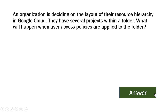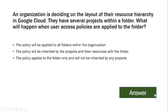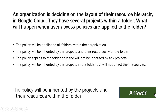An organization is deciding on the layout of their resources hierarchy in Google Cloud. They have several projects within a folder. What will happen when user access policies are applied to the folder? The options are: the policy will be applied to all folders within the organization, the policy will be inherited by the projects and their resources within the folder, the policy applies to the folder only and will not be inherited by any projects, or the policy will be inherited by the projects but will not affect their resources. The answer is: the policy will be inherited by the projects and their resources within the folder.